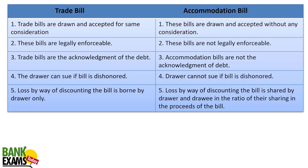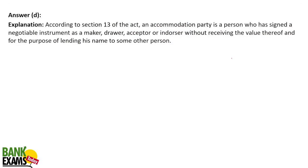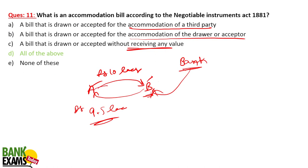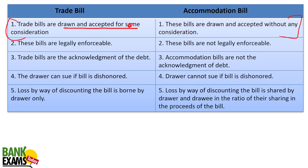What are the differences between trade bills and accommodation bills? Trade bills are drawn and accepted for some consideration — there is proper value involved. Accommodation bills have no such consideration. Trade bills are legally enforceable between A and B — the drawer can sue if the bill is dishonored. Accommodation bills are not legally enforceable between the parties: if B does not pay A, A cannot do anything. But the bank has rights against B. The loss from discounting is borne by the drawer alone in an accommodation bill, whereas in a trade bill the loss is shared by the drawer and drawee in the ratio of their sharing in the proceeds.